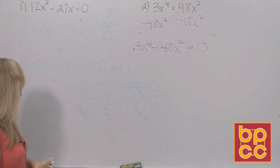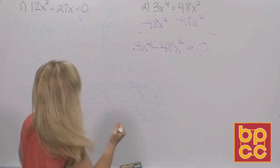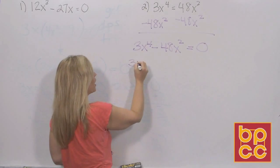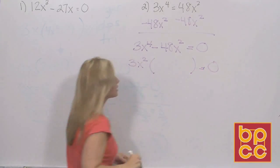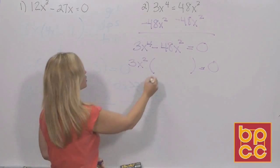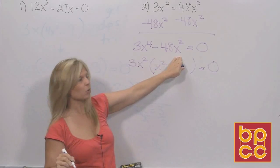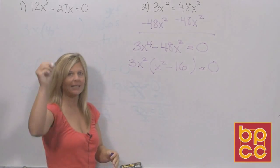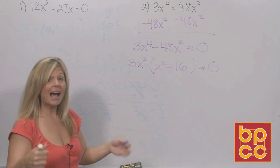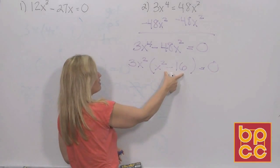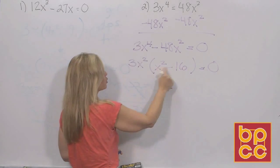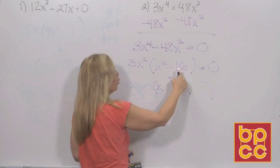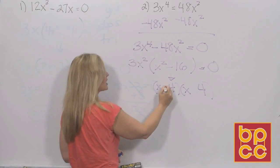We pull out 3x². That gives us 3x²(x² - 16). 3x⁴ ÷ 3x² = x², and -48x² ÷ 3x² = -16. But we're not done — x² - 16 is a difference of perfect squares. This breaks down into two more parentheses. What times itself is x²? That's x. What times itself is 16? That's 4. We want negative 16, so one is plus and one is minus: (x + 4)(x - 4). Don't forget the GCF 3x² in front.